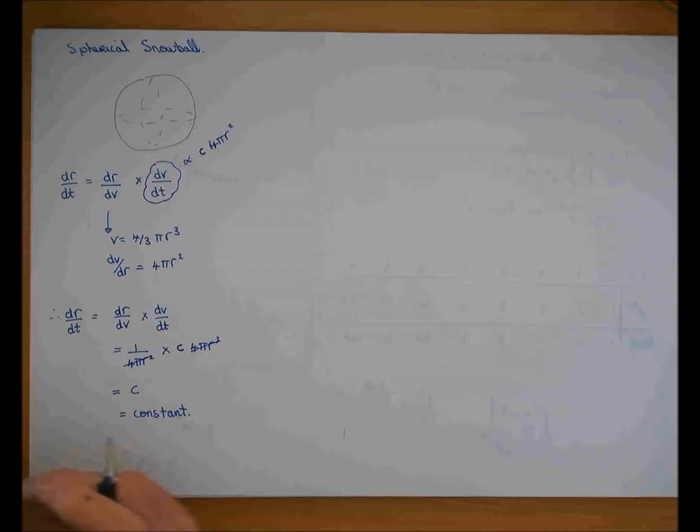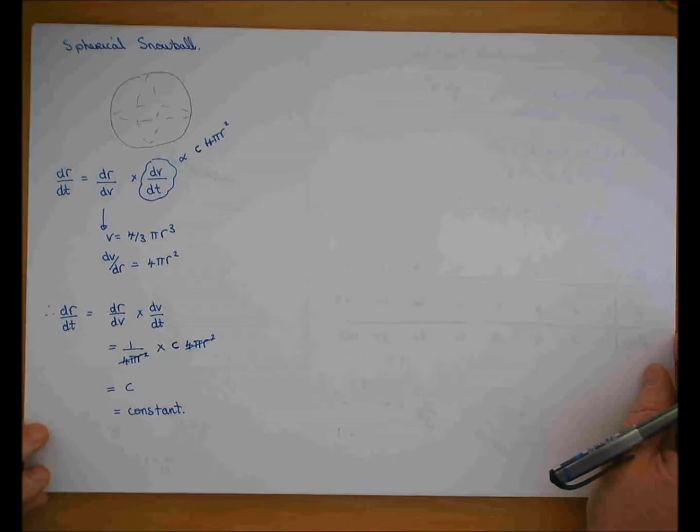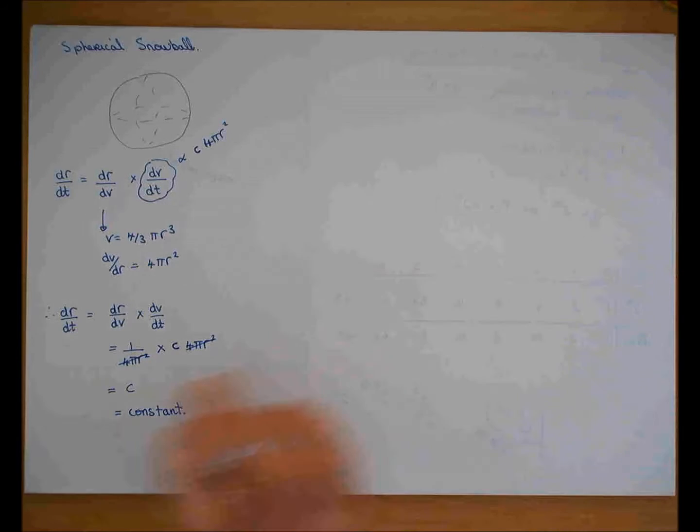In other words, the radius is decreasing at a constant rate. For example, every minute it goes down by a tenth, or every minute it goes down by a quarter. In that case it would take 4 minutes to get to the end. That's that part.